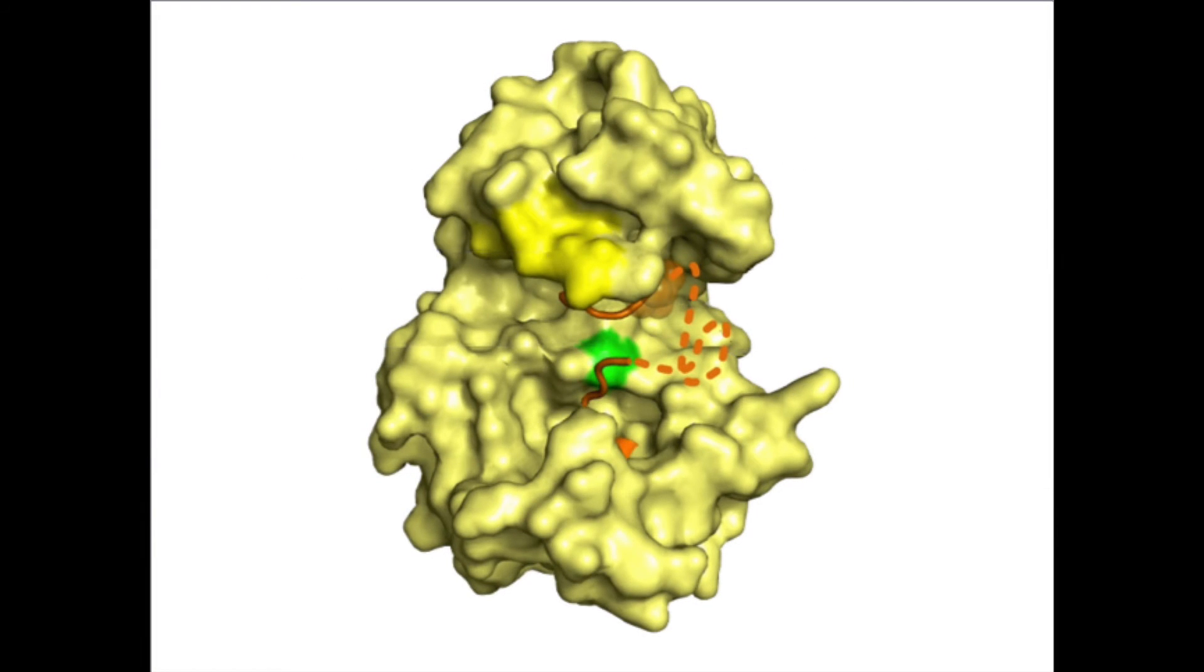The C-lobe has the MEK binding domain or activation segment as shown in orange. When inactive, this activation segment is disorganized as well. MEK is not recognized either and can therefore not bind.